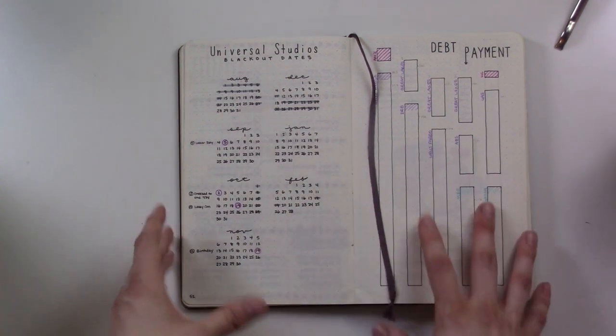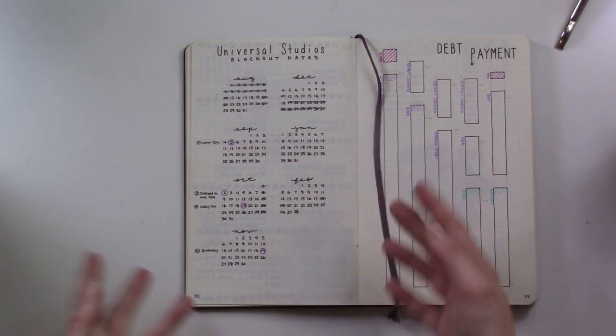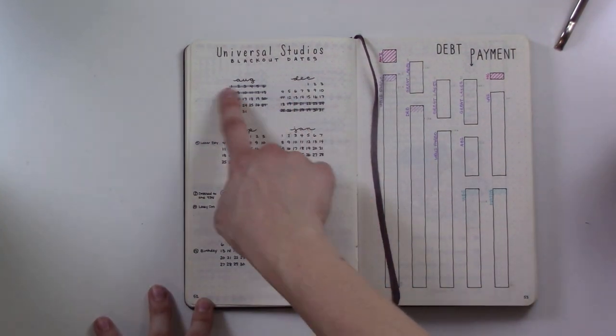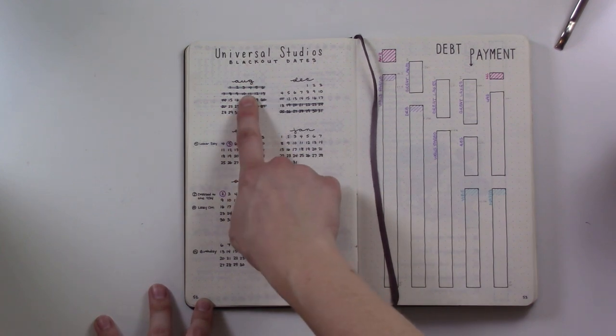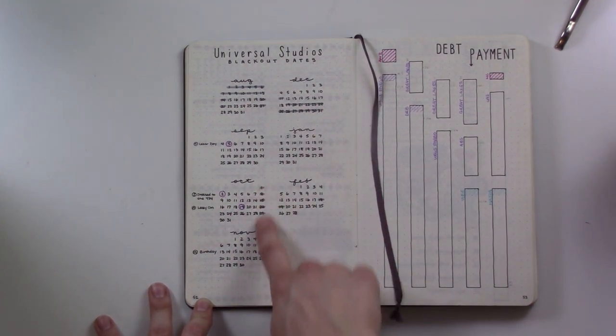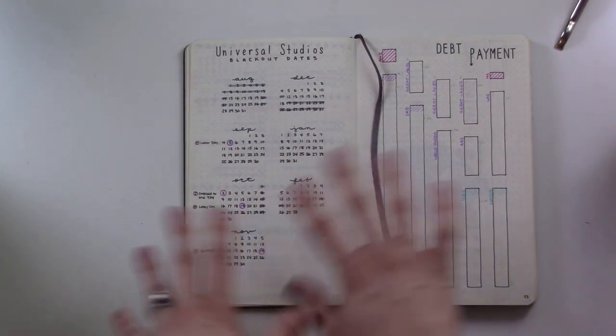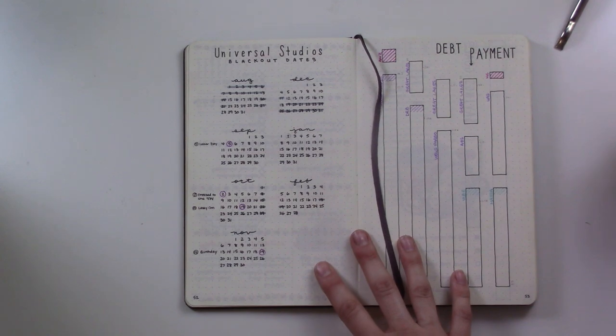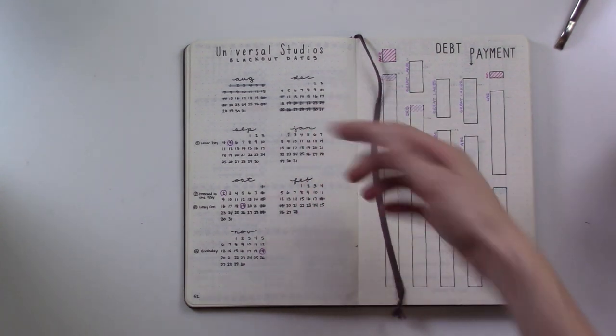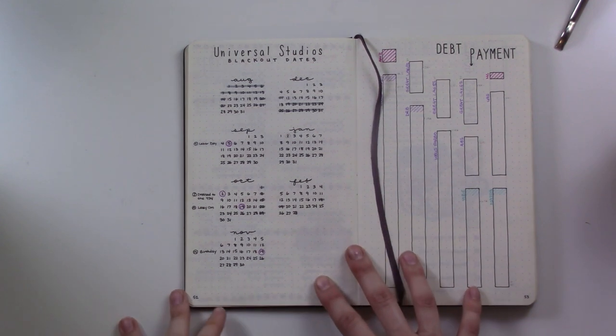We got the pass I believe on Labor Day here and it was good until the end of February the next year, so it wasn't a full year but it was a really good deal. And so I wanted to make sure I knew when the blockout dates were so I actually just went ahead and crossed them all out here in pen. You'll see that that's the summer blockout date, here's the Christmas ones, and then in October they had Saturdays blocked out for some reason, but there were actually quite a lot of days available and I wanted to just keep track of how often we were going.